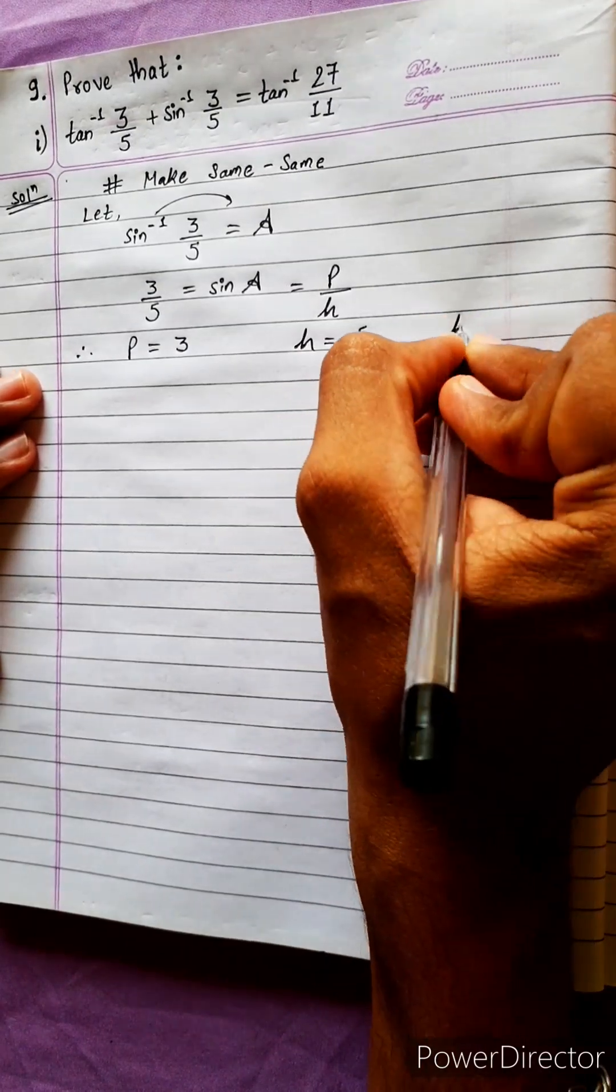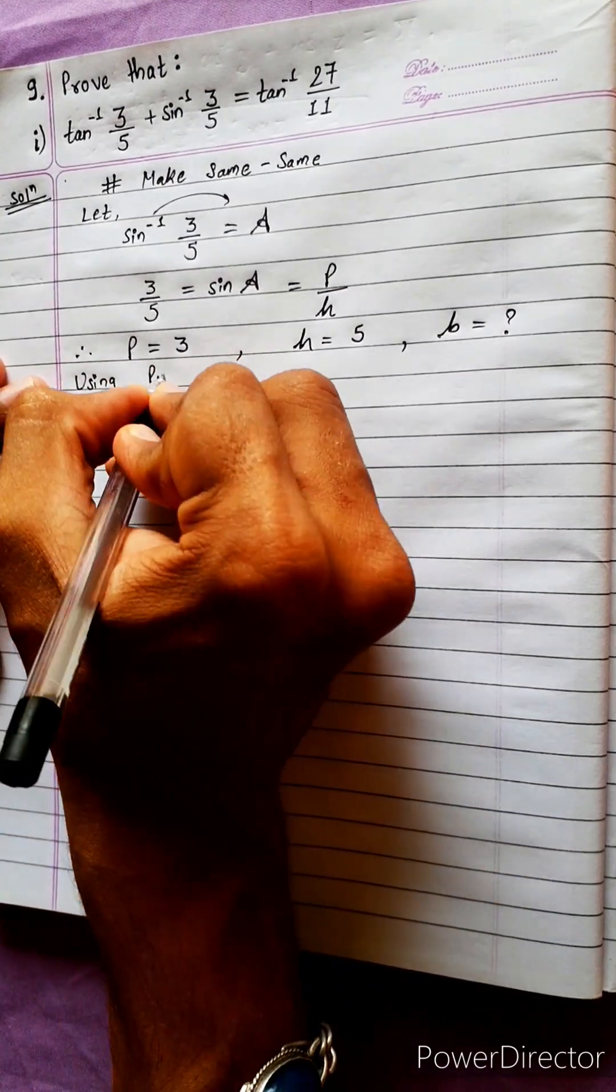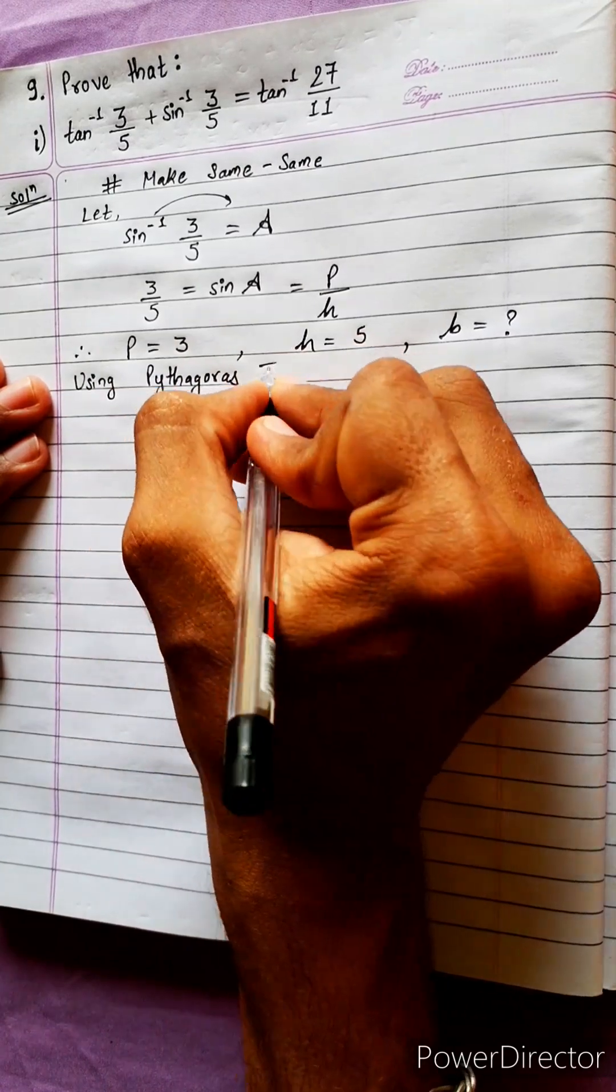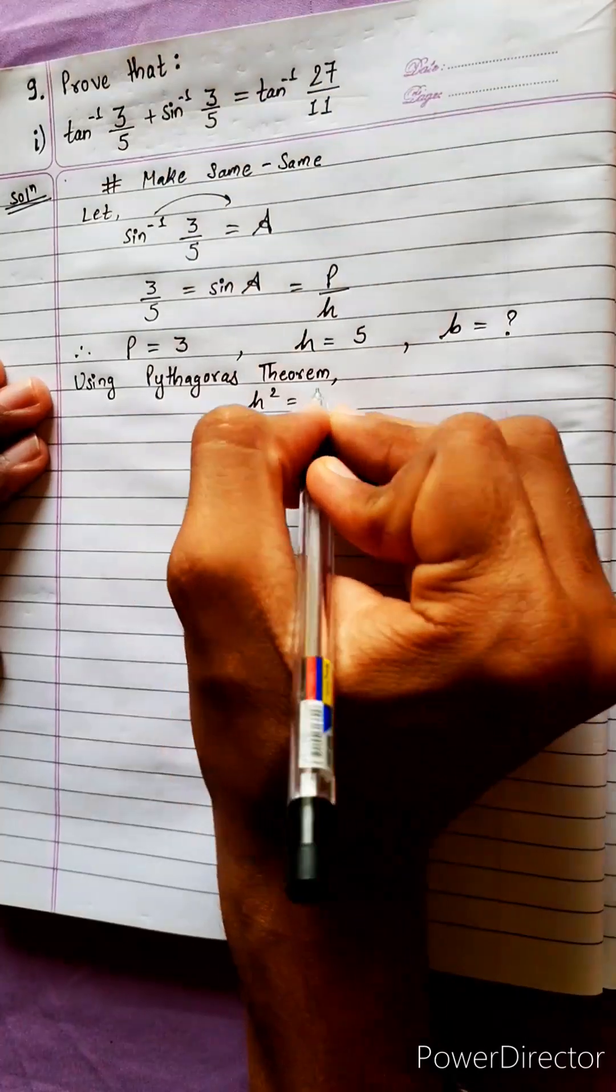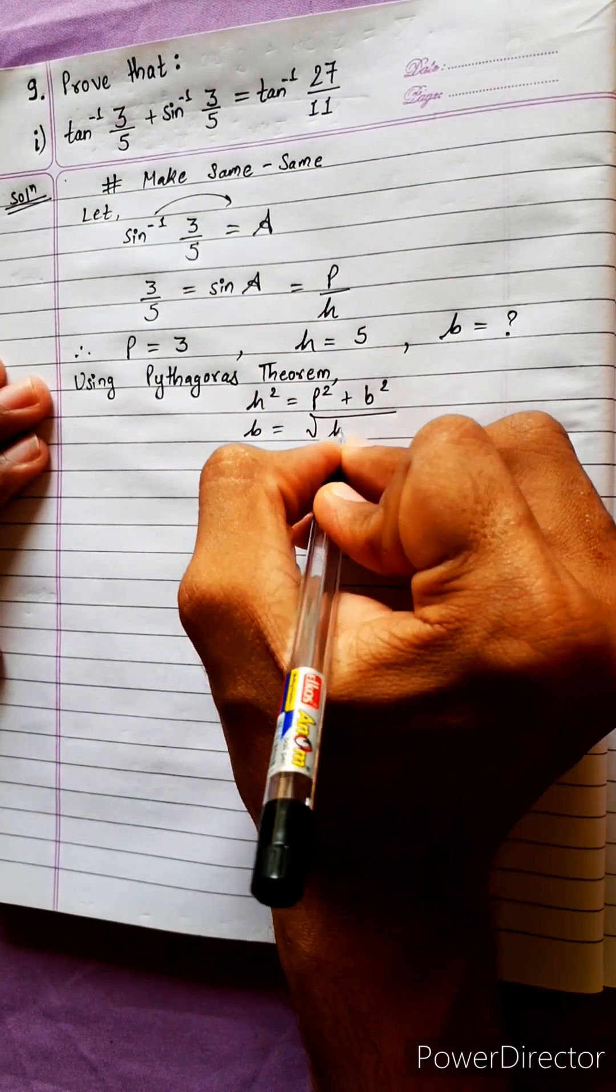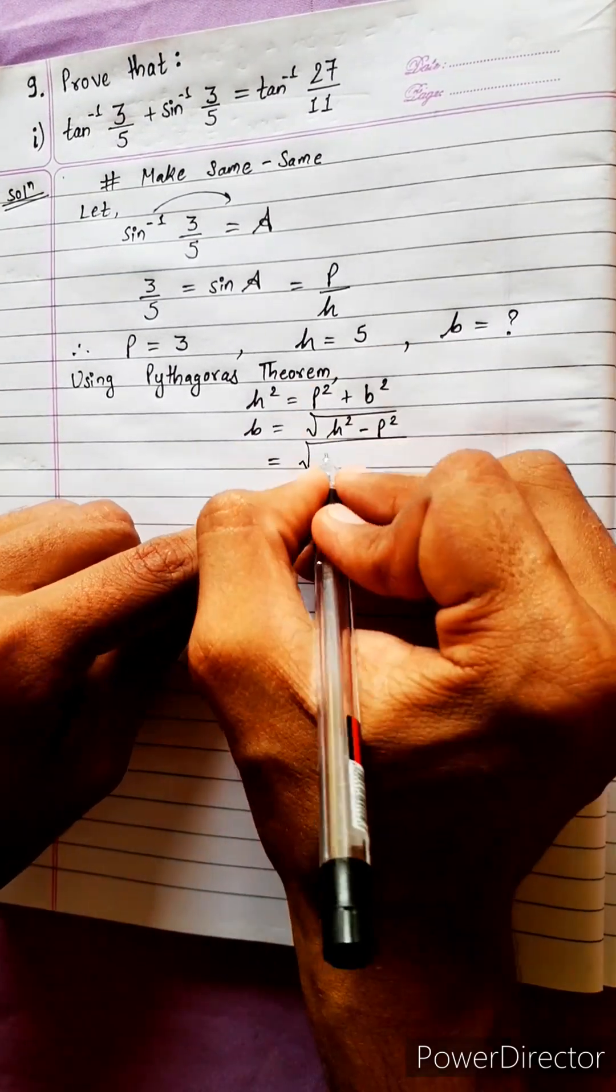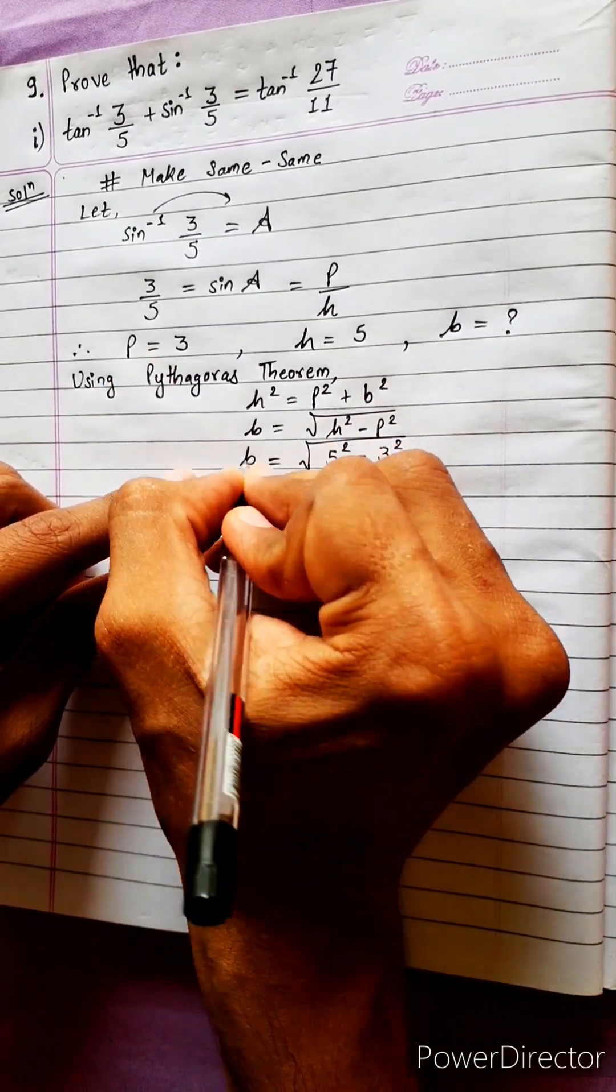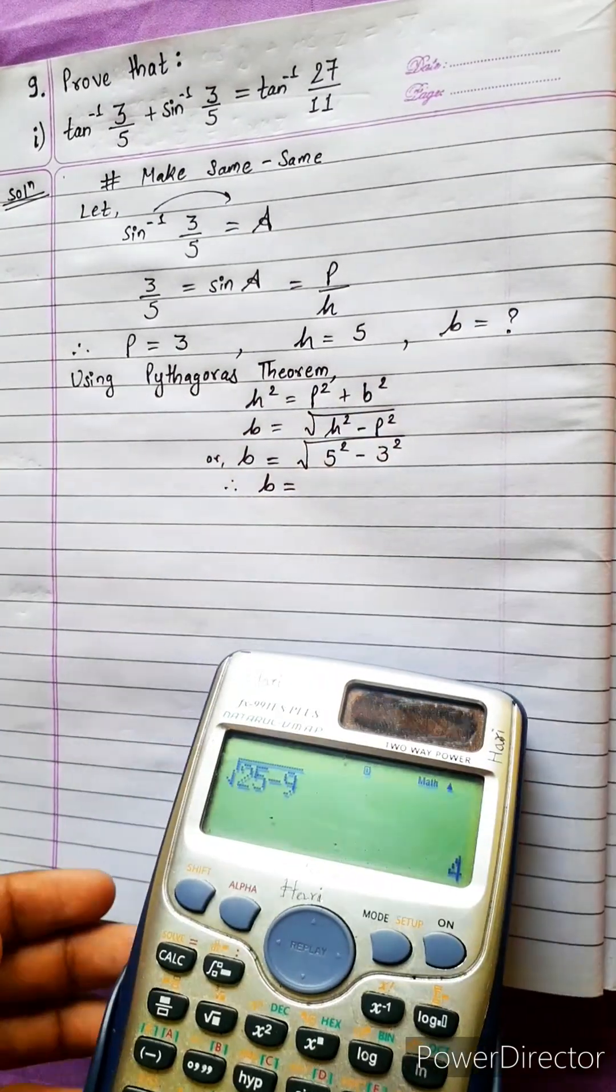Now base equals b. Using Pythagoreas theorem, h square equals p square plus b square, so b equals under root h square minus p square. Therefore b equals 4.